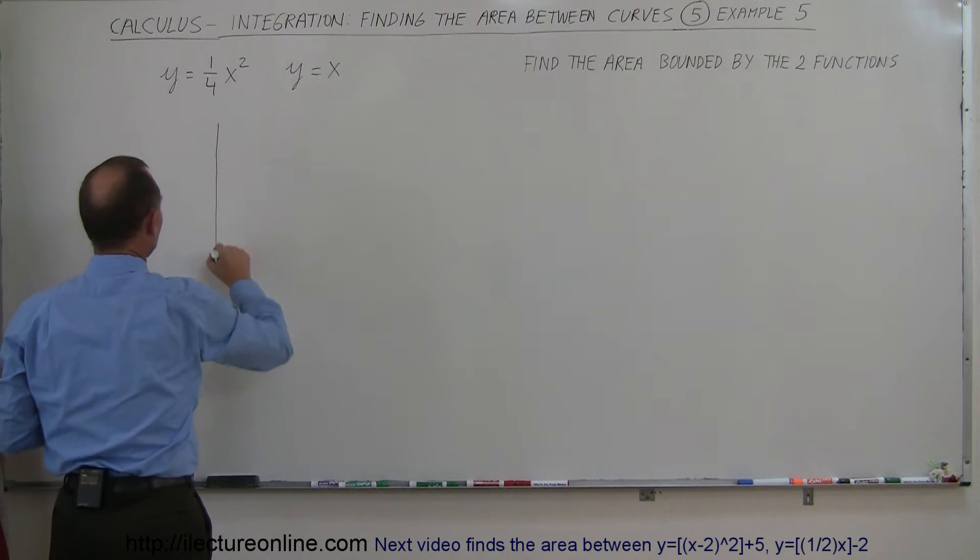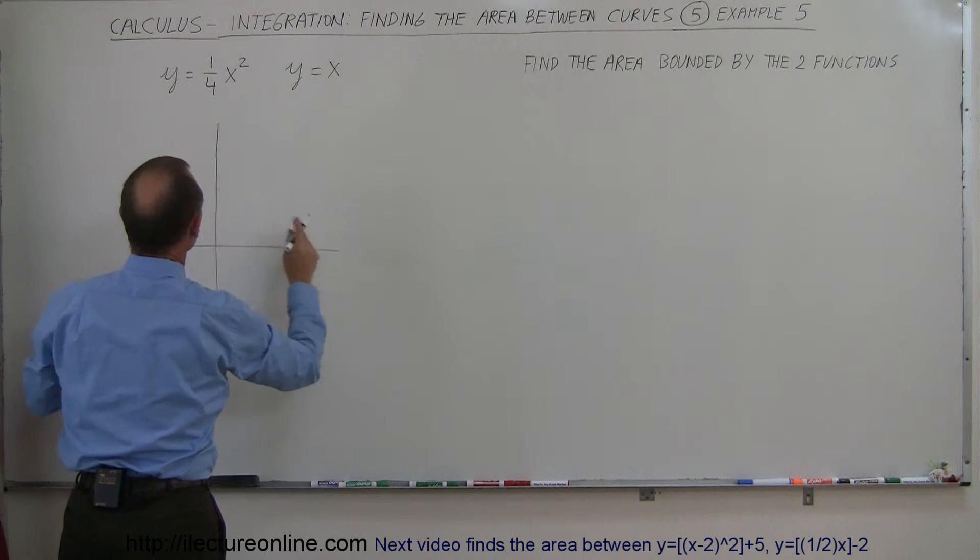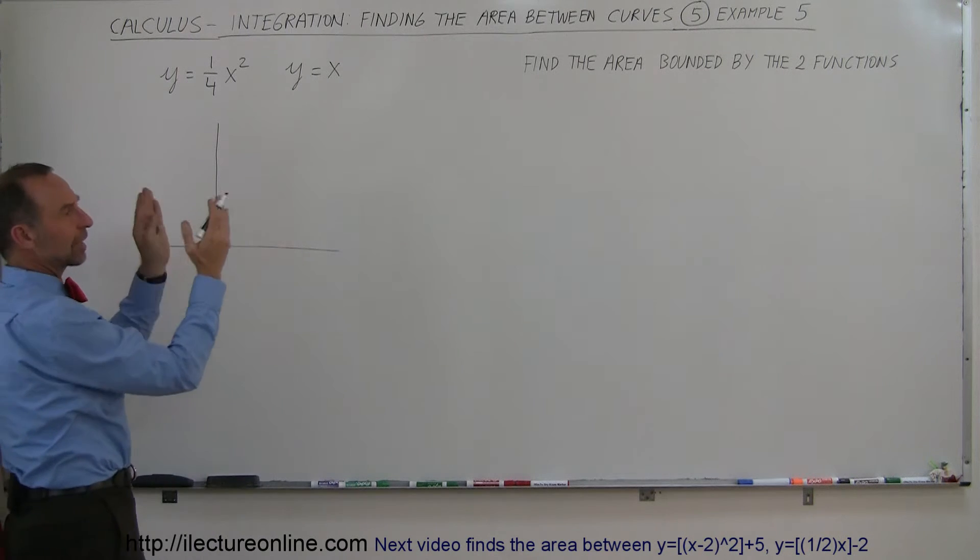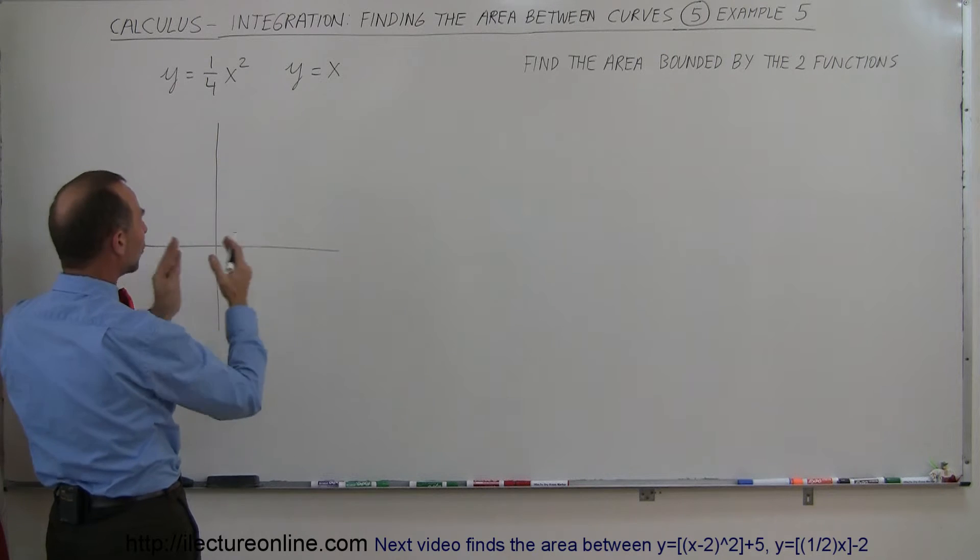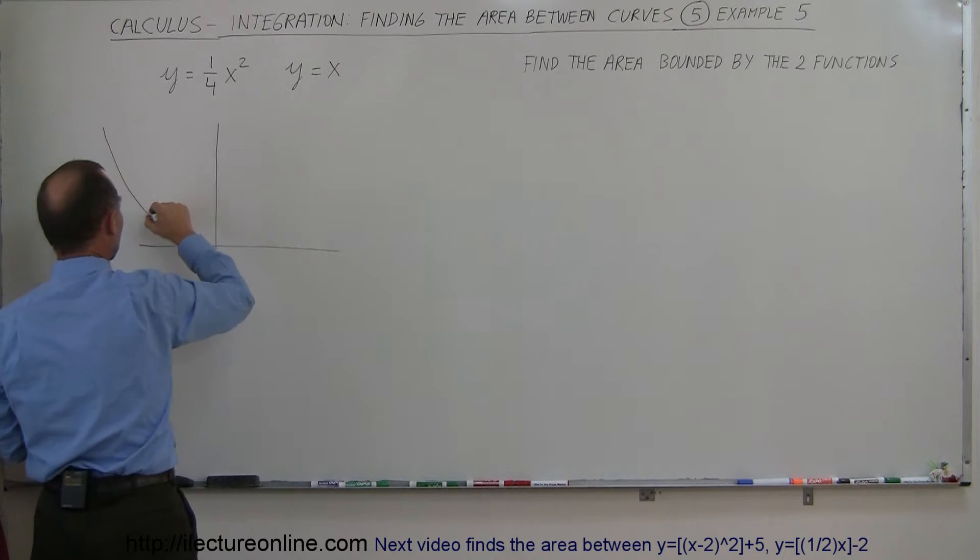The first function looks like a parabola that opens upward. It's 1 fourth x squared, that means it opens widely like this, so the function parabola looks like this.